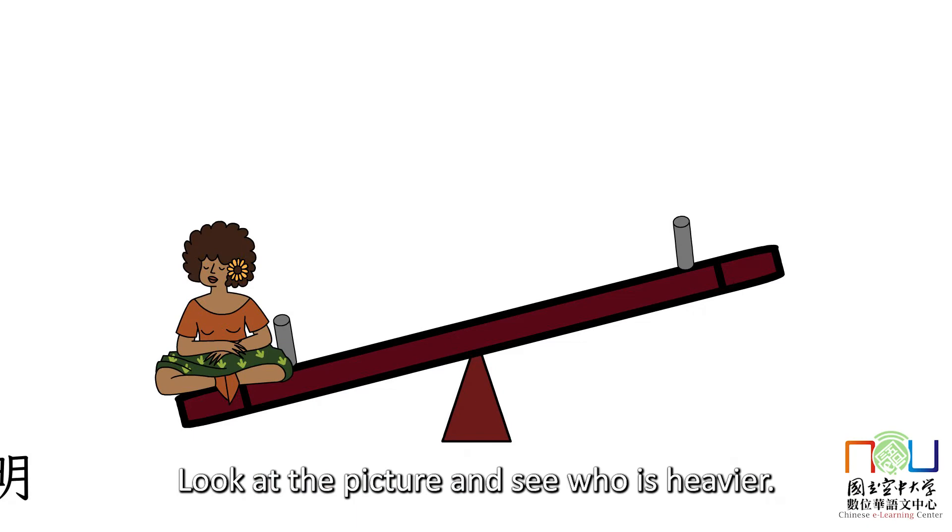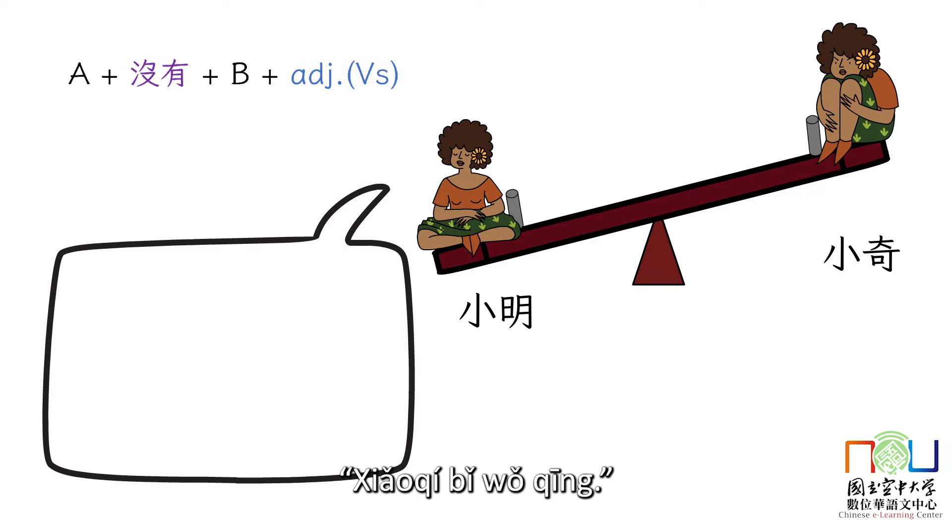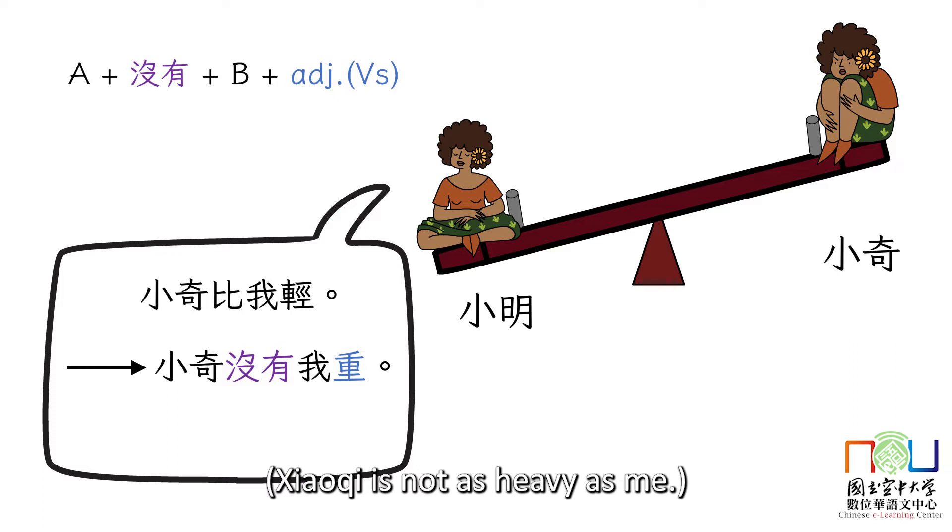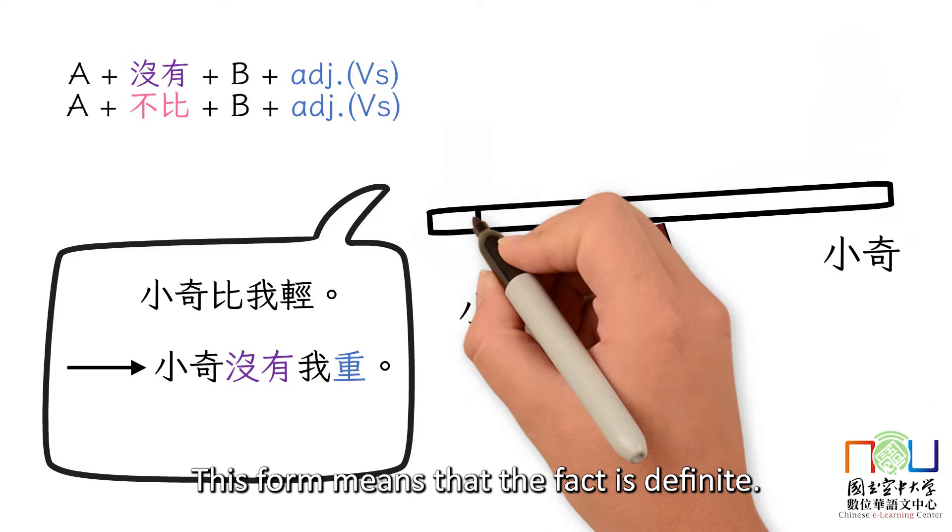Look at the picture and see who is heavier. 小明 can say 小齐比我輕, 小齐 is lighter than me. She can also say 小齐没有我重, 小齐 is not as heavy as me. This form means that the fact is definite.